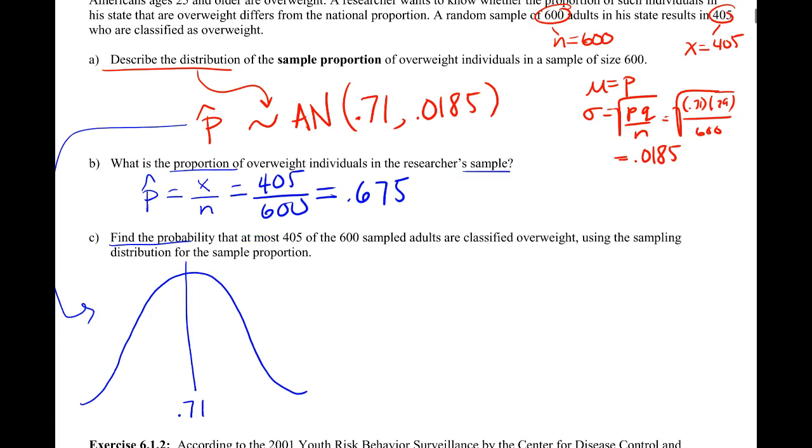Now we can't use this at most 405 as it is because 405 would be way over here, which wouldn't make any sense, and at most would be the whole curve. In fact, it's not on the same scale as what we're talking about, so that's why we don't want to use it. We're in proportion land, so 405 is a number. We want a proportion, but we know 405 is the same thing as 67.5% of the people in the sample.